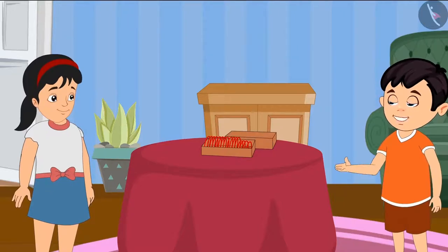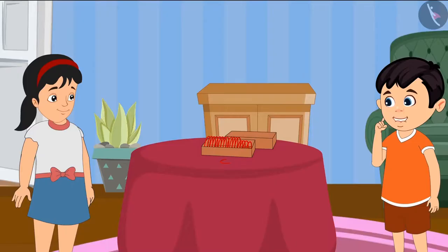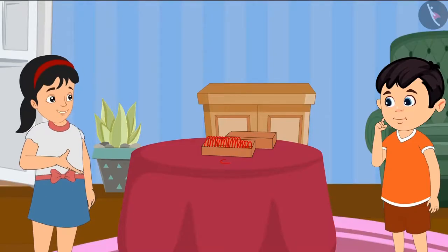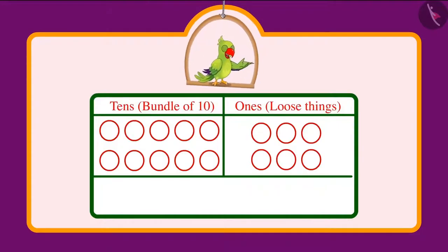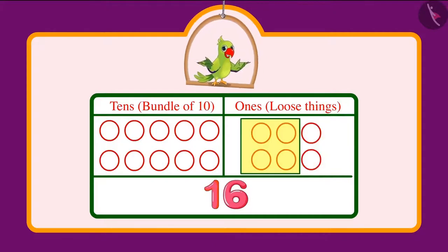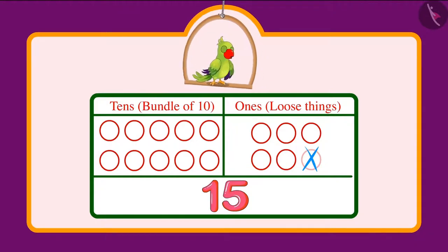Come on, let's remove the broken bangles one by one and count the remaining bangles. Removed 1 from 16 bangles. Hey, but it looks like we have more than 6. Hey Chotu, you are counting it wrong. So friends, let us see why Aarti said this. 16 consists of 1 tenth and 6 ones. And when we subtract 1 unit from 16, then we are left with 1 tenth and 5 ones. That is 15 bangles.